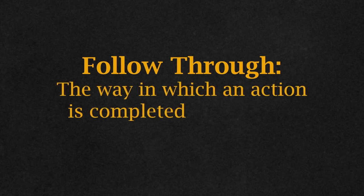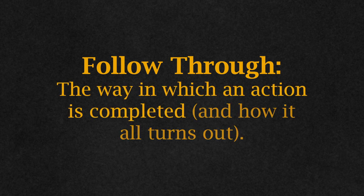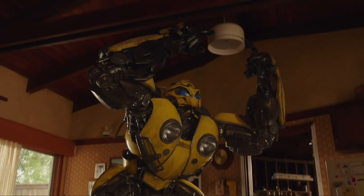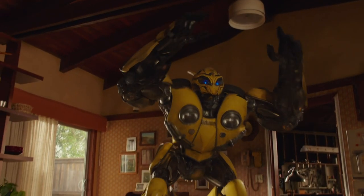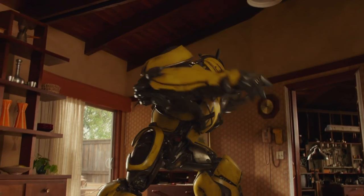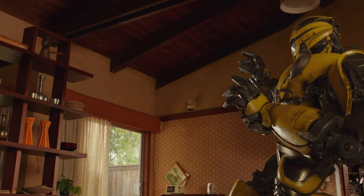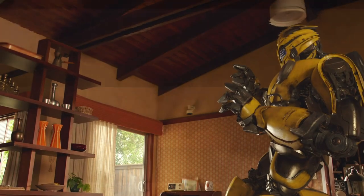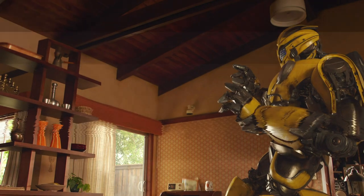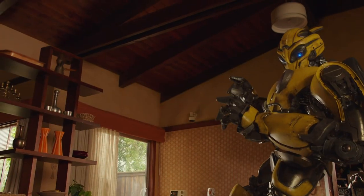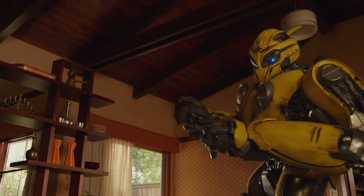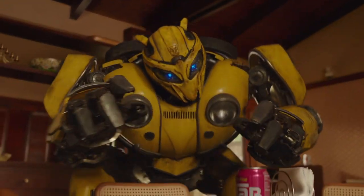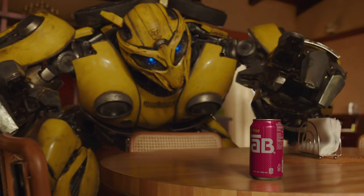And then there's the follow through — the way in which an action is completed. When Bumblebee hits a shelf while getting his bearings, he turns around — there's that overlapping action — in a visibly more careful way, and stares at it for a moment. The follow through for this simple action tells the audience that Bumblebee is trying to be careful.